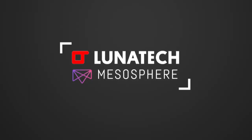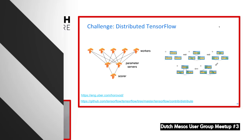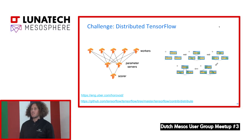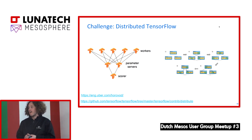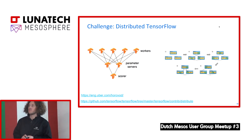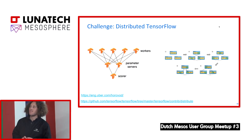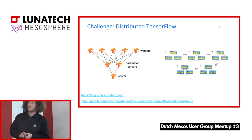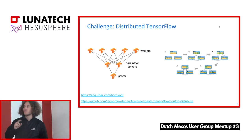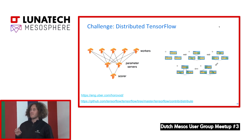Next challenge — how many of you have ever run distributed TensorFlow? The traditional TensorFlow distribution has workers that do the actual computation like matrix multiplication, and they need to update each other with their results. This is why in the traditional distributed TensorFlow model you have so-called parameter servers — workers send their updates to parameter servers and get back a new set of parameters from the others.